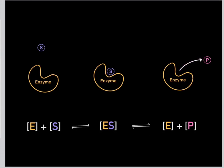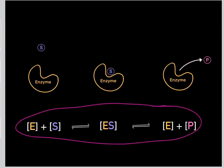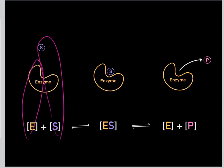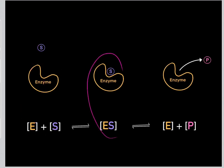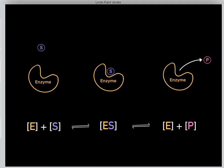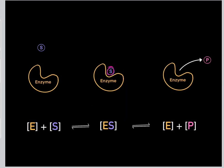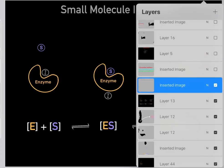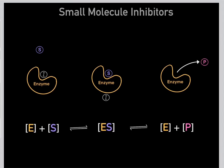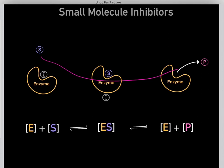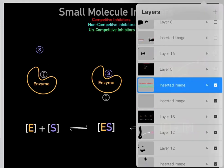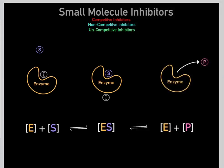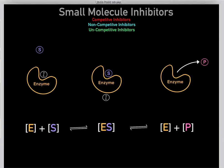Biochemists like to use diagrams to represent what's going on. First we have the enzyme and the substrate, then they react forming the enzyme-substrate complex, then we convert the substrate into product and it falls off. There are many types of small molecule inhibitors — the three I want to talk about are competitive inhibitors, non-competitive inhibitors, and uncompetitive inhibitors.